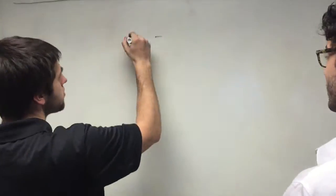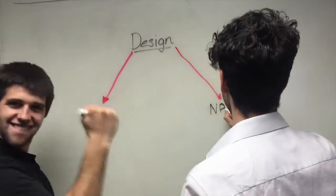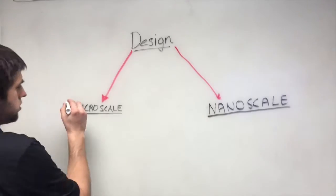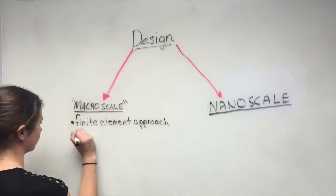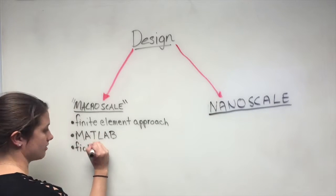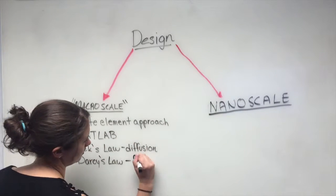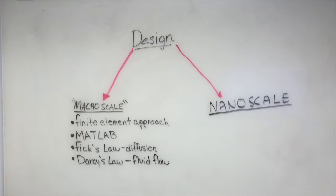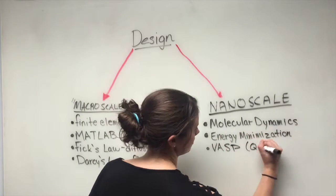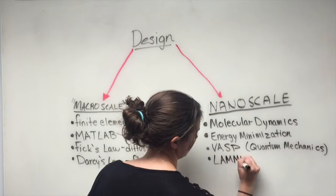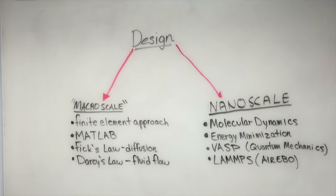We have broken up this design into two components. A design on the macro scale, and a design on the nano scale. Or at least the quasi-macro scale. For macro scale modeling, we used finite element computations in MATLAB to understand fluid flow through porous media. We did this by applying Fick's law in conjunction with Darcy's law. For nanoscale modeling, or atomistic modeling, we used both energy minimizations and molecular dynamics to understand the porous graphene and alkane interactions on the atomic scale. Specifically, the energy minimizations used a quantum mechanical approach in VASP, and the molecular dynamics used the Airebo potential in LAMMPS.